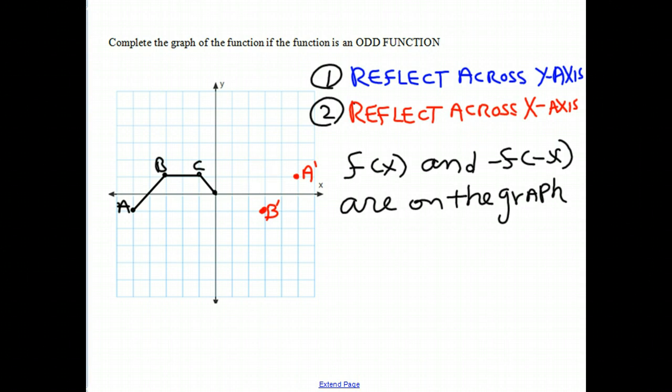Let's look at C. At C, this point is at negative 1, 1. If we reflect across the y-axis, it goes to 1, 1. And then if we reflect that point across the x-axis, instead of being one unit above the x-axis, it would be one unit below. And there's our corresponding point for C. We'll call it C prime.